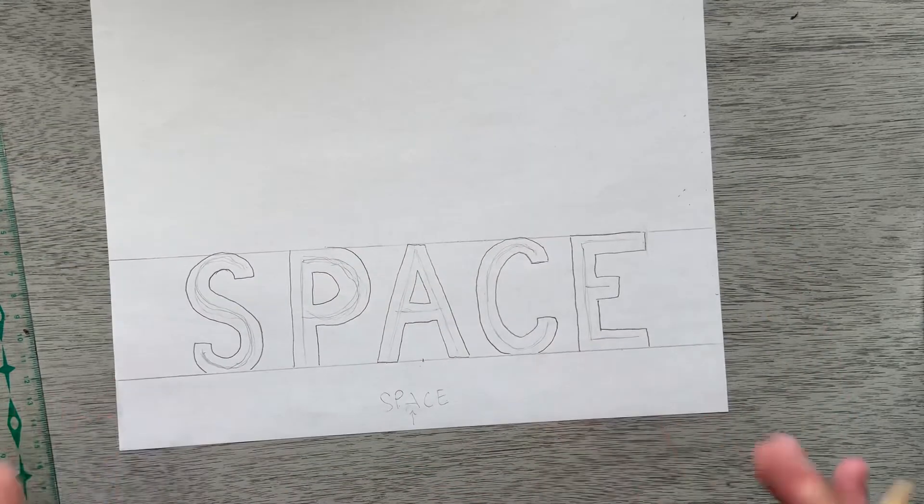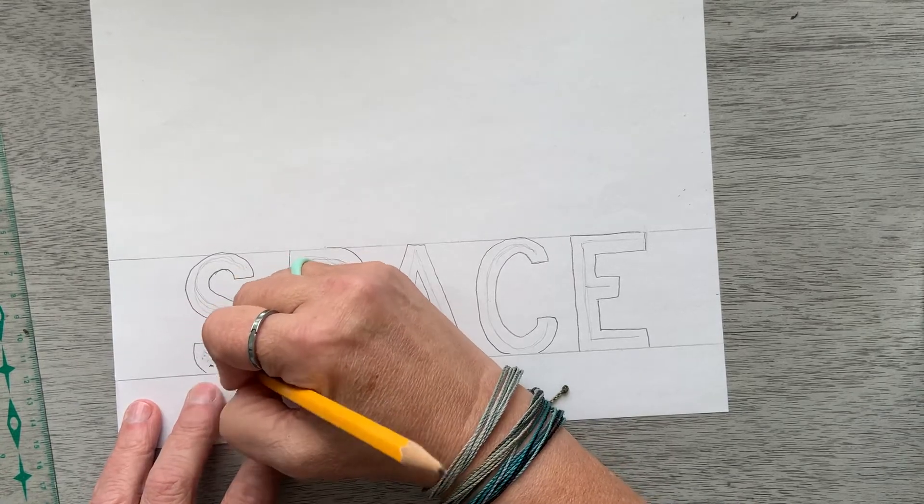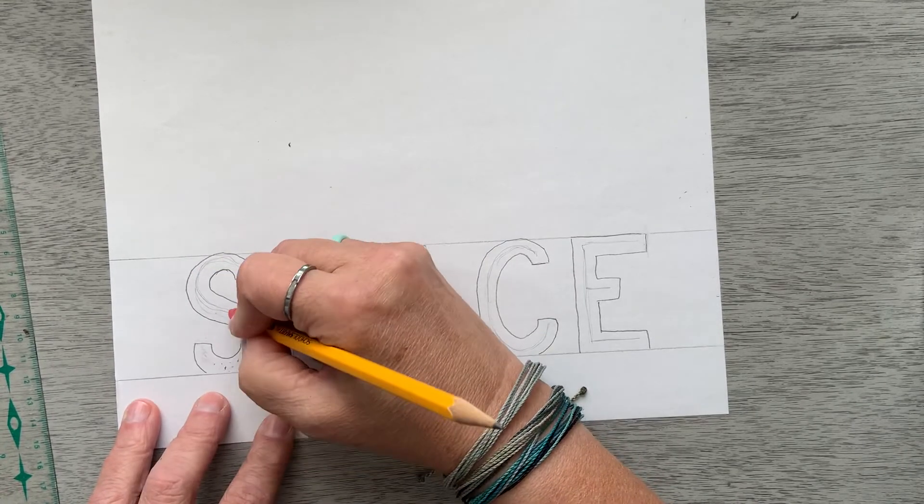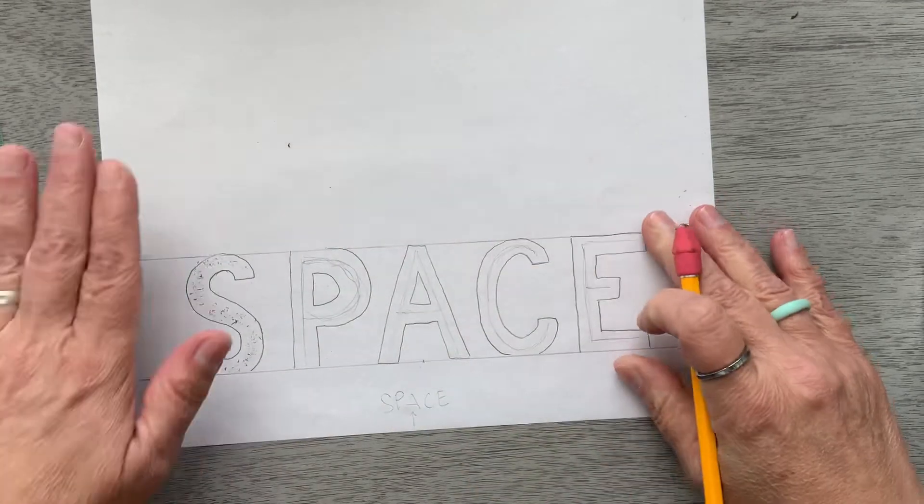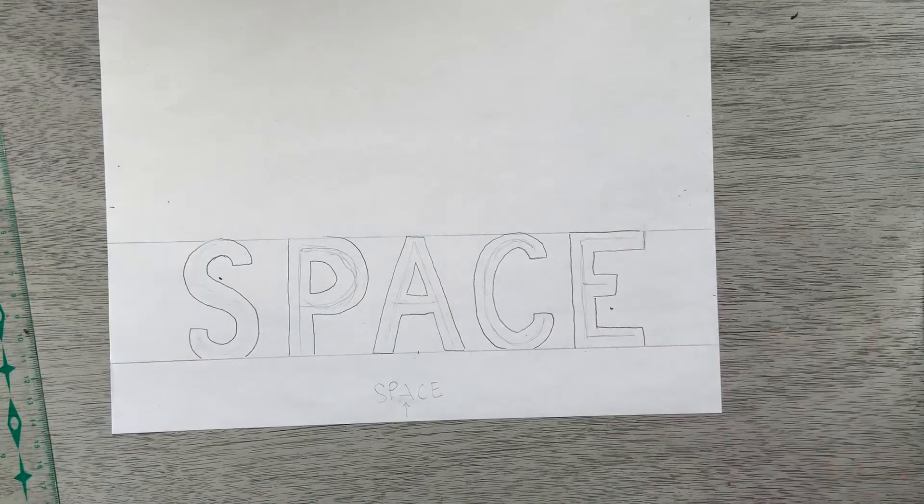There we go. So now we have our block letters, and then all we have to do is erase what's inside them, and erase our guidelines, and we are ready for the next step.